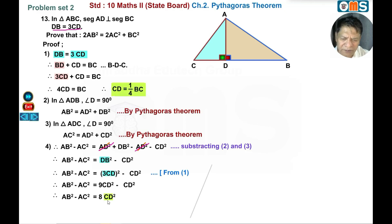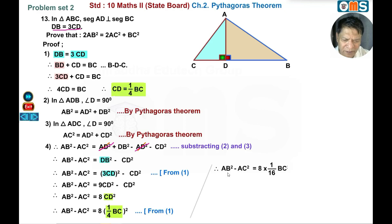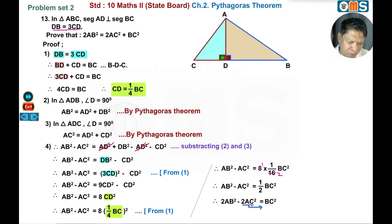Therefore AB square minus AC square equals 8CD square. Substituting CD equals one-fourth BC: AB square minus AC square equals 8 into one-fourth BC, squared — that is 8 into 1 by 16 BC square, which equals 1 by 2 BC square. Multiplying throughout by 2: 2AB square minus 2AC square equals BC square, so 2AB square equals 2AC square plus BC square. That is your answer. Thank you.